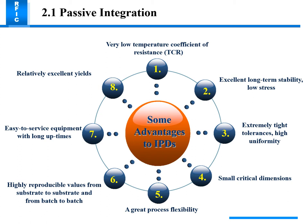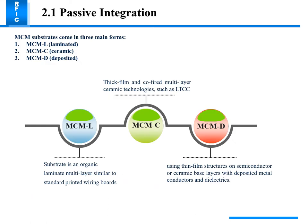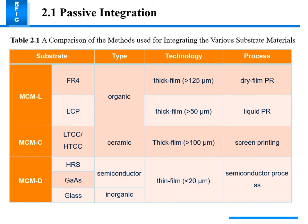MMC substrates come in three main forms: MMCL which is laminated, MMC ceramic, and MMCD which is deposited. Thin film and co-fired multi-layer ceramic technologies such as LTCC and MCL laminated use an organic laminated multi-layer substrate similar to standard printed wiring boards, using thin film structures on semiconductor or ceramic-based layers with deposited conductors and dielectrics.